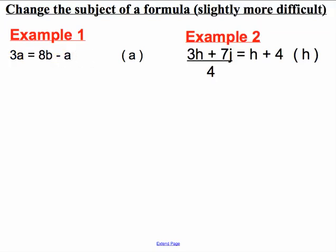Well, with a little thought you might say to yourself, imagine I added a to both sides. On the left hand side I would get 4a and on the right hand side I would be left with 8b because negative a plus a gives me 0.